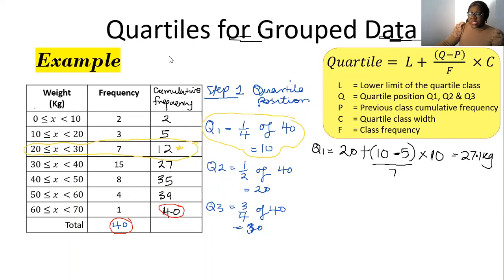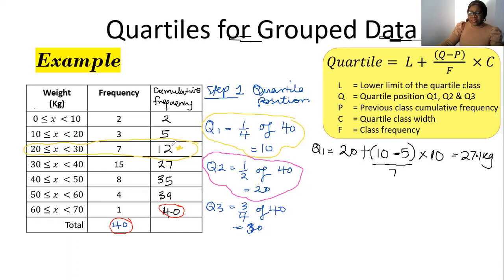Let's calculate the same thing now for quartile two. For quartile two, we already worked out the quartile position to be 20. So we're looking for the 20th data. We have the 12th data in the previous class, so the 20th one must be inside the next class — the class of 30 to 40. I'll highlight that class so we know which one we're working with for quartile two.